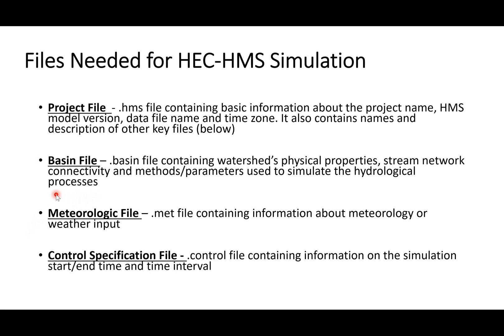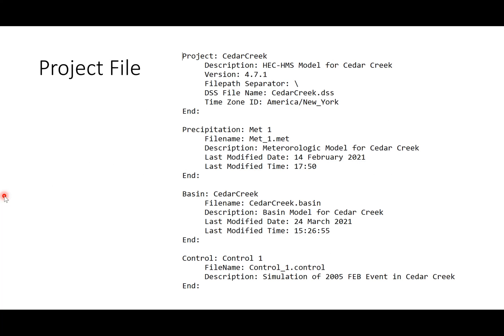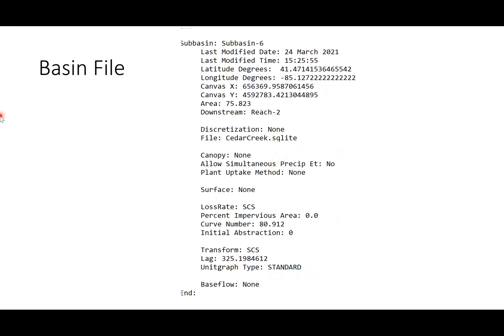The control specification file contains information on the simulation start date, end date, and time interval. Looking at an actual project file, it is simply a text file — even though it has a .hms extension, you can open it with Notepad. It includes the name, version, data file, time zone, and references the meteorologic file, basin file (e.g., CedarCreek.basin), and control specification file.